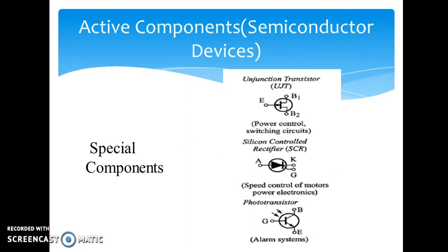Some of the special active components are also shown here such as UGT which is uni junction diode or a double base transistor. It is used in power control switching devices. Next is silicon control rectifier where for power device it is used. Power handling capacity can be increased with this. Mainly the controls are achieved with the help of thyristor family that is SCRs. Then you have photo transistors which you see in application of alarm systems etc.